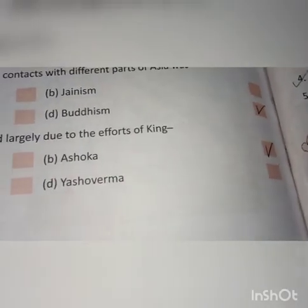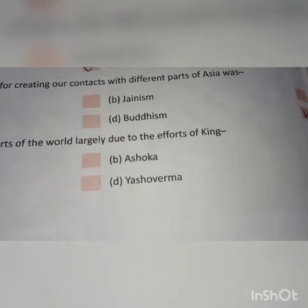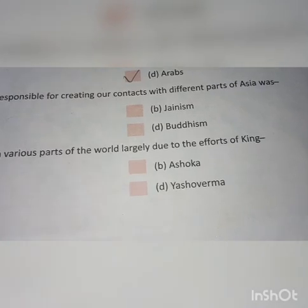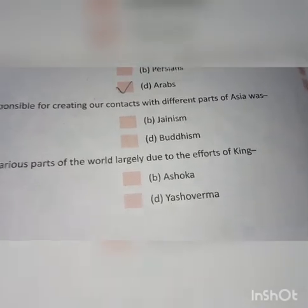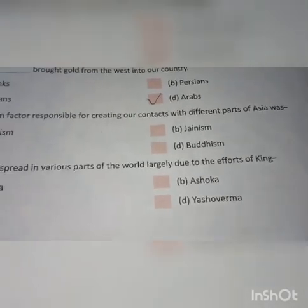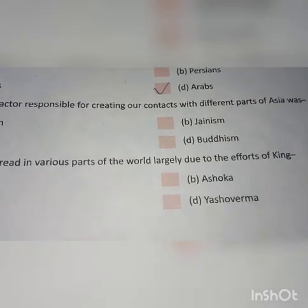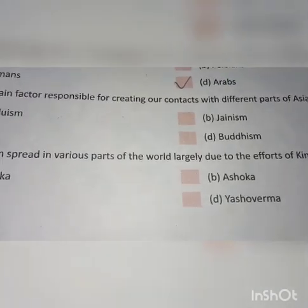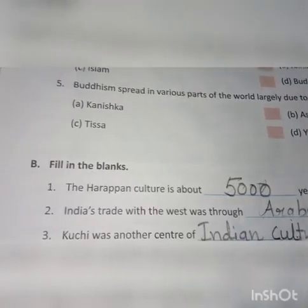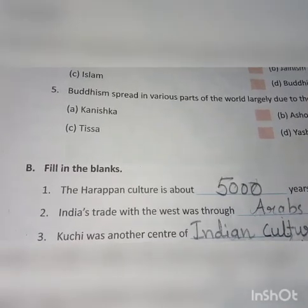The right answer is B — Ashoka. Ashoka is the right answer. As we read in the chapter, he sent both his son and daughter to different countries for the propagation of Buddhism. In this way, Ashoka spread Buddhism to different countries, and people came to our country from there, strengthening our connections with other countries.